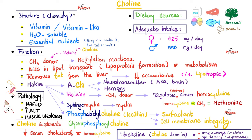Choline can become betaine, and betaine is a methyl group donor important for methylation reactions. For example, betaine donates a methyl group to homocysteine so that homocysteine becomes methionine. There is some evidence that choline supplements lower homocysteine levels in the blood. We know that babies born with genetic defects leading to homocysteinuria have higher risks of heart attacks and strokes. However, whether lowering homocysteine via choline supplements actually reduces cardiovascular disease risk in normal individuals is still debatable.